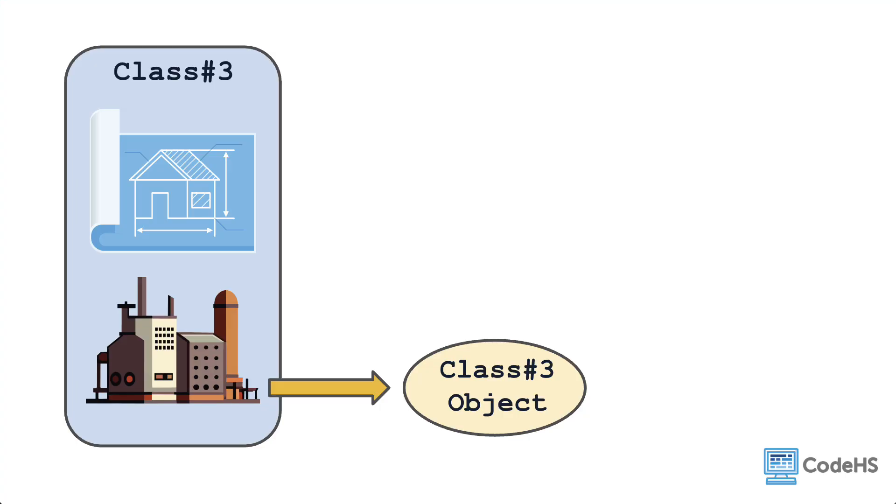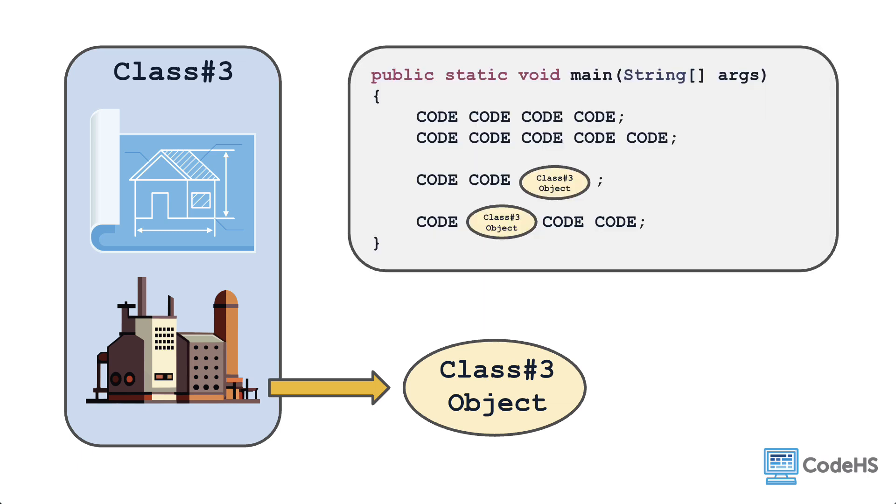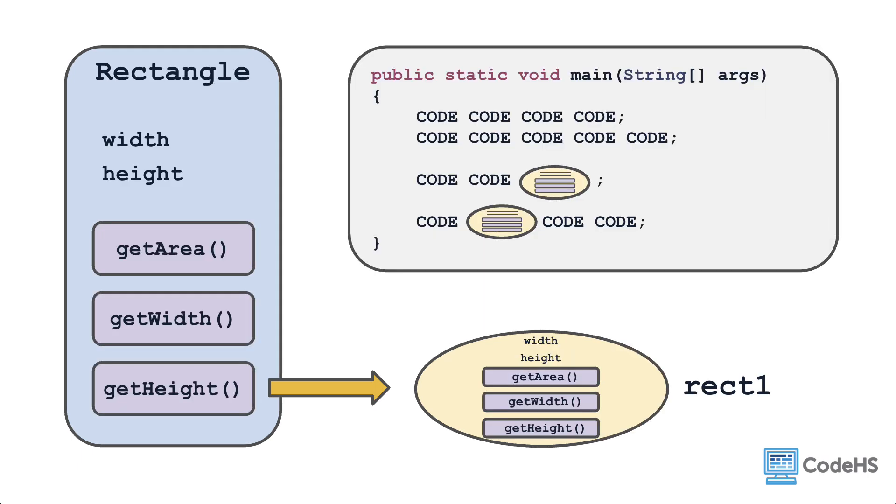In previous lessons, you've learned that classes can act as the blueprint and factory for creating objects, which are custom data structures that you can use throughout the rest of your program. For example, you can use the Rectangle class to create individual rectangle objects, each one receiving methods and attribute values. Let's now take a closer look at how this whole process works.